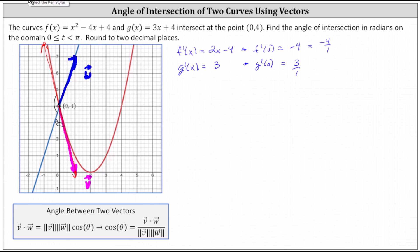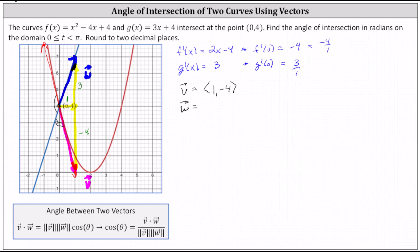Now let's write vector v and w in component form. Vector v has a slope of negative four, or negative four divided by one, which indicates an x component of positive one and a y component of negative four. Notice the y component divided by the x component equals the slope of negative four. For vector w, which has a slope of positive three, the x component is one and the y component is positive three. Again, the y component divided by the x component equals the slope of positive three.